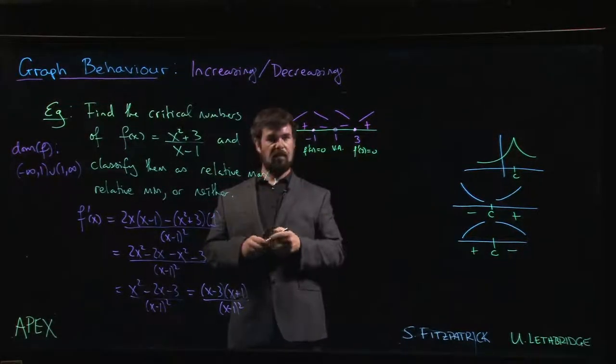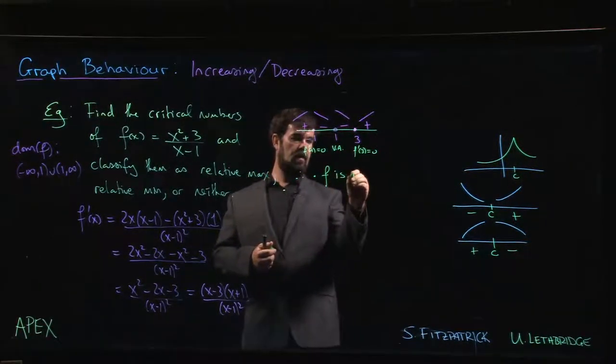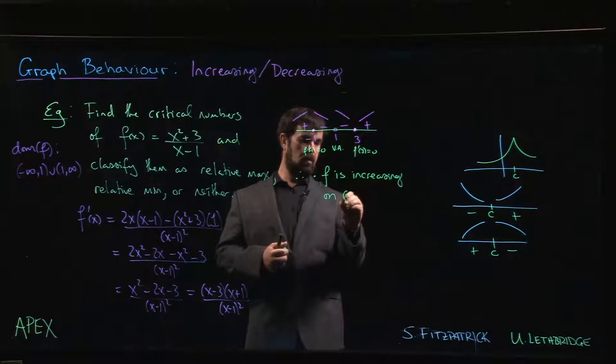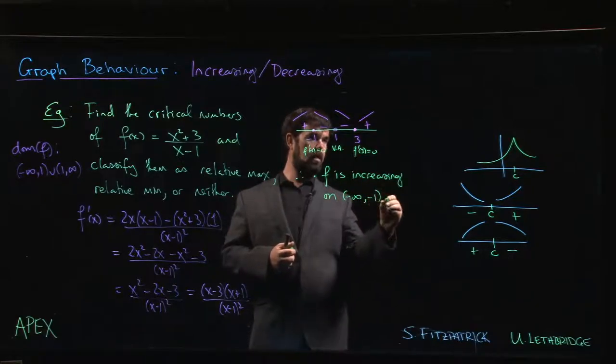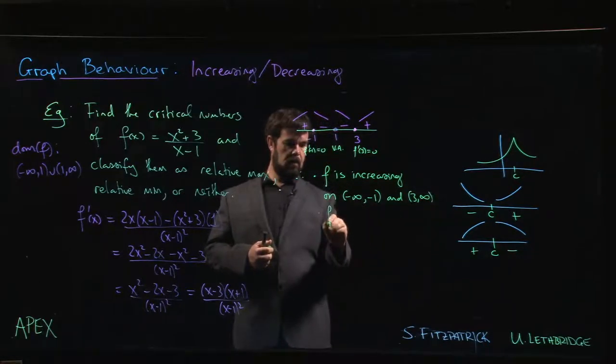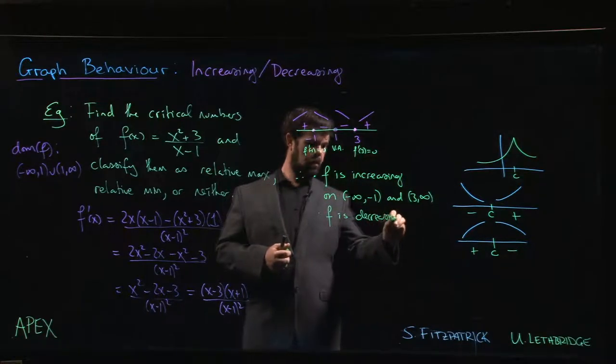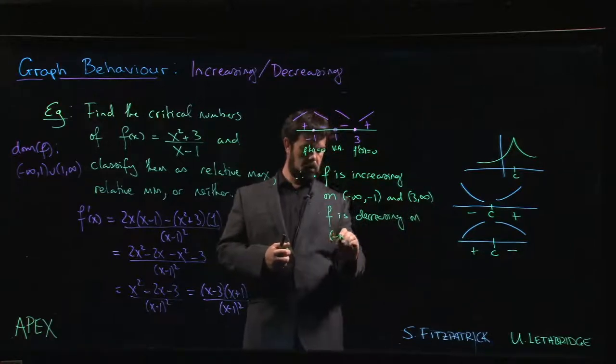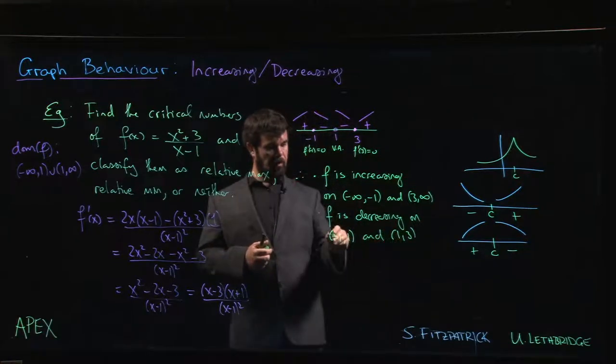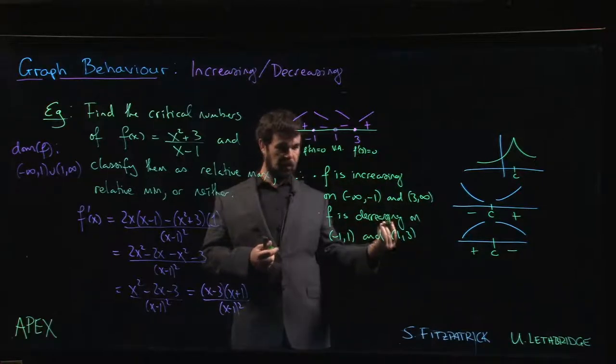Okay, so what does this tell me? This tells me that first of all, f is increasing on minus infinity to minus 1 and the interval from 3 to infinity. f is decreasing on minus 1 to 1 and 1 to 3. Notice here, we don't say that it's decreasing from minus 1 to 3. We have to leave 1 out, because 1 is not part of the domain, so we leave it out.